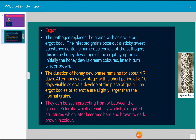They can be seen projecting from or between the glumes. Sclerotia are initially whitish elongated structures which later become hard and brown to black in color. The sclerotia consist of only spores and fungal hyphae inside. These are the characteristic features of the ergot type of symptom, and this is a very common disease in grasses.